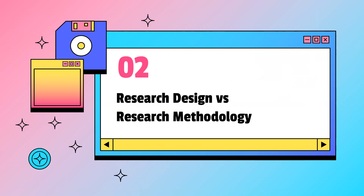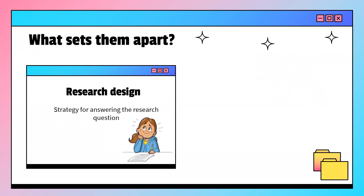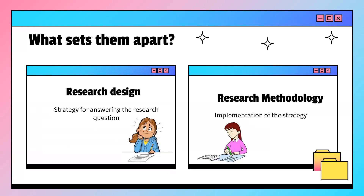What is the difference between research design and research methodology? Research design is a strategy for answering the research question. When we have identified the research problem, it is necessary that we have a plan of how we can solve it — how to conduct the research systematically and solve the research problem. This strategy or plan is necessary for all researchers because without planning it is difficult to implement any aspect of the research work. So once we have planned, we now need to implement. The implementation of this strategy is called the research methodology.